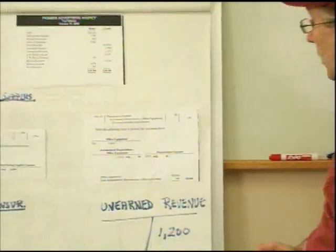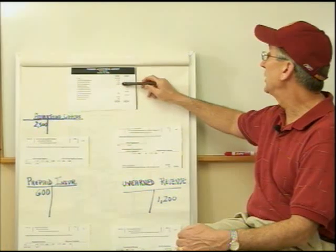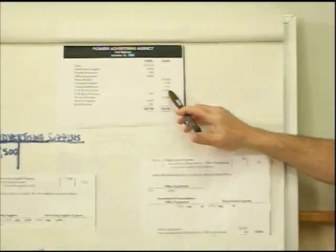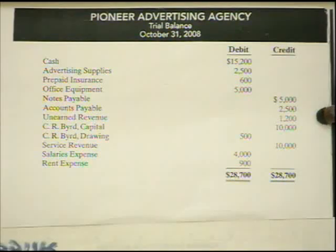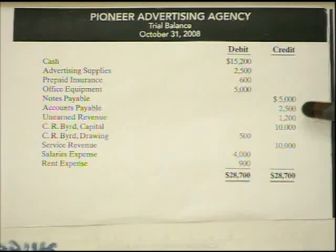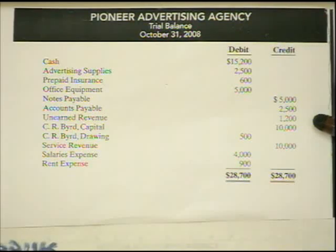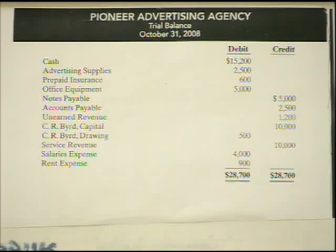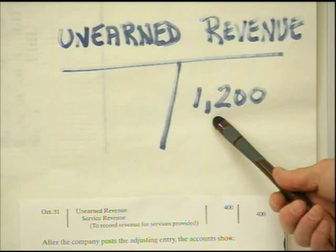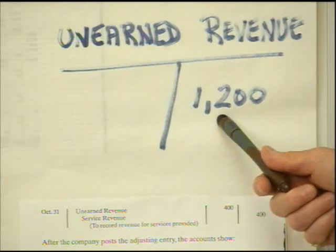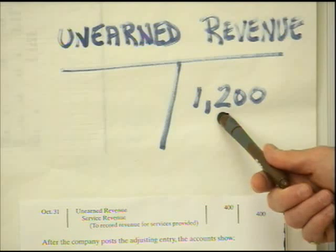Anytime we have plant, property, and equipment, we'll always be recording depreciation expense and accumulated depreciation. The next adjustment would be on unearned revenue. Unearned revenue is money collected in advance for a service or goods we still need to provide, so we carry it as a liability. Right now we have $1,200 in unearned revenue — that represents revenue due to us that we have not yet earned. As we earn it, we will debit it out.